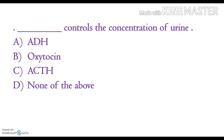Anti-diuretic hormone (vasopressin) controls the concentration of urine. The function of oxytocin is that it acts on smooth muscles of our body and stimulates their contraction. ACTH (adrenocorticotrophic hormone) is needed for our adrenal glands to work properly and helps our body react to stress.